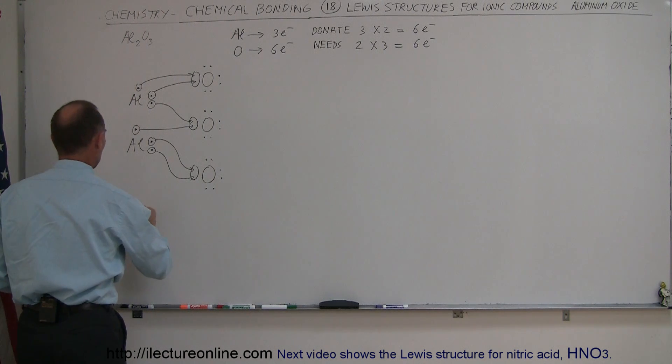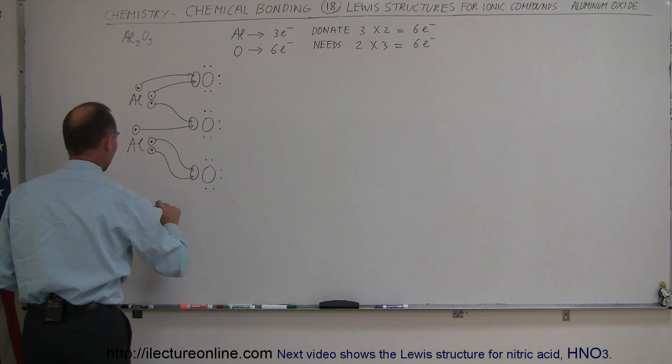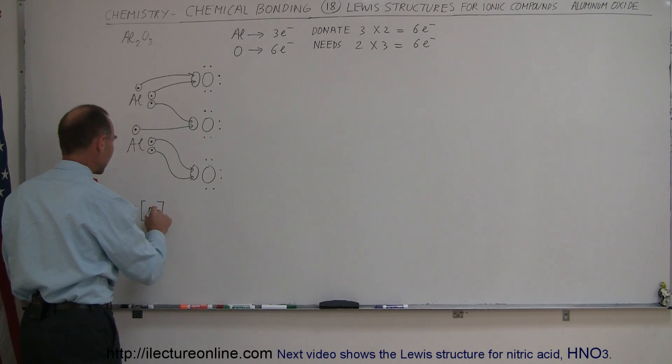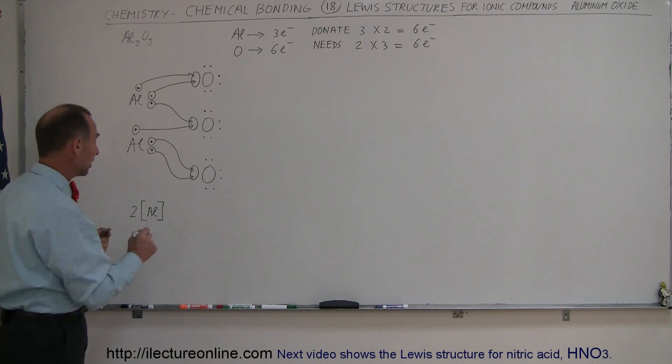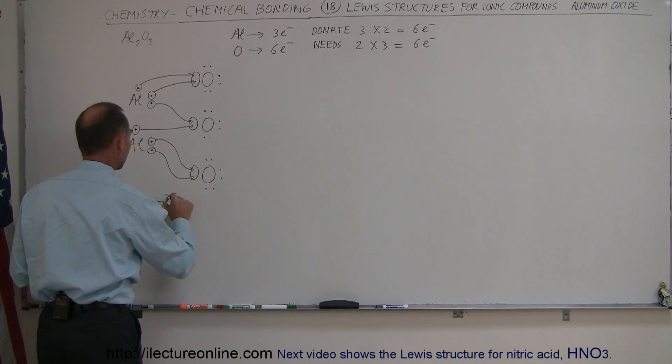So we end up with two aluminum ions and since each of those aluminum ions have donated three electrons they now will have a three plus charge.